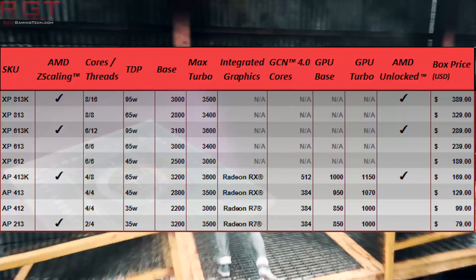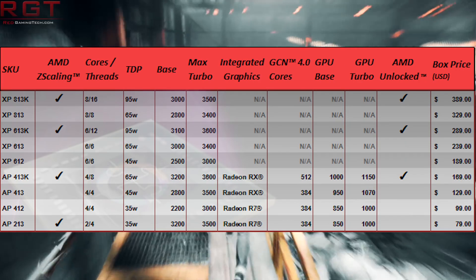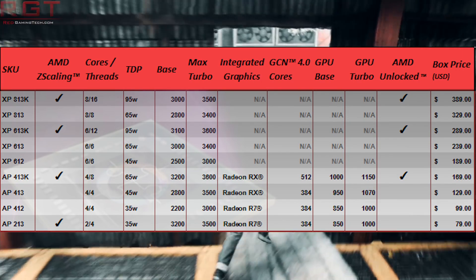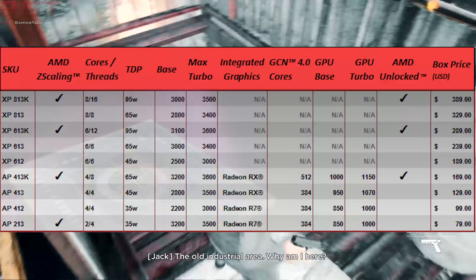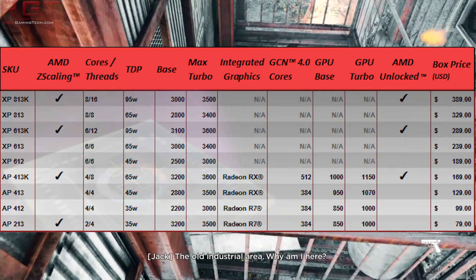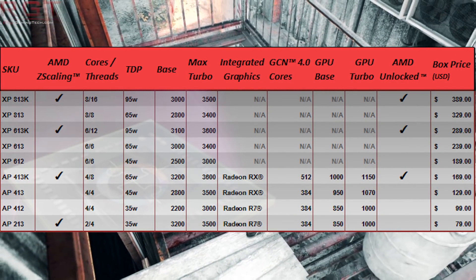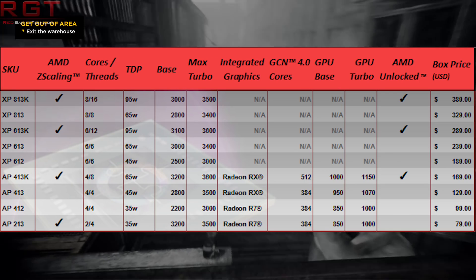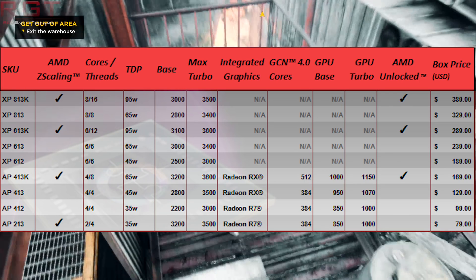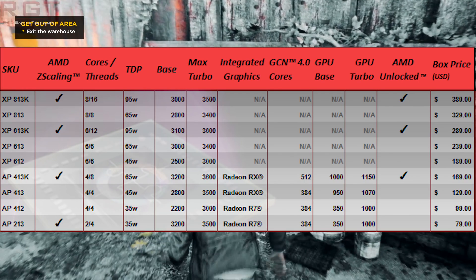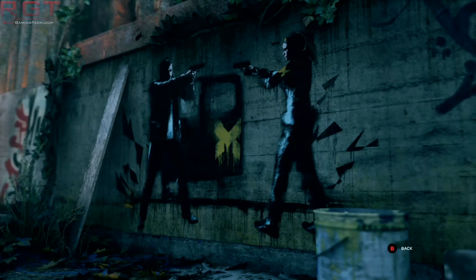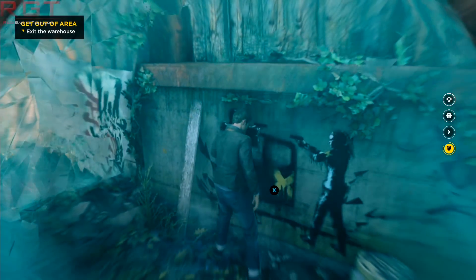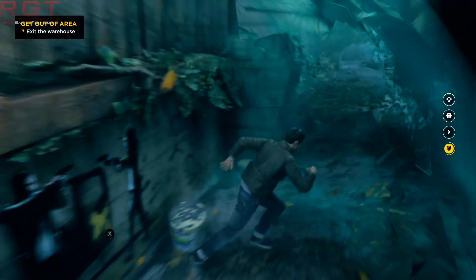We've all heard pricing for Zen — or Ryzen as some are calling the desktop version. Other people are calling it the Athlon XP. I'm just going to call it Summit Ridge or Zen — you can replace that mentally with whatever you prefer. Some of those prices are $300, some $400, and some go up to $500 depending on the version and whether it's a so-called black edition with higher clock speeds.